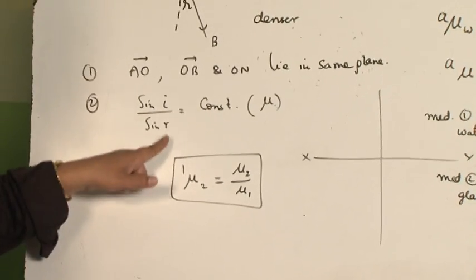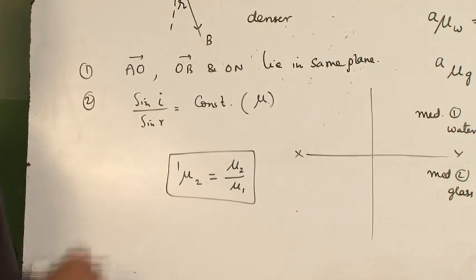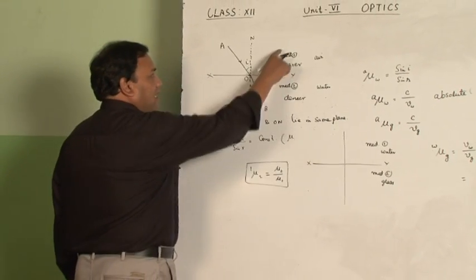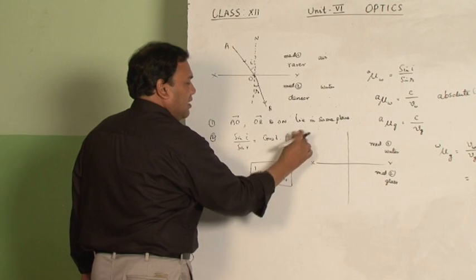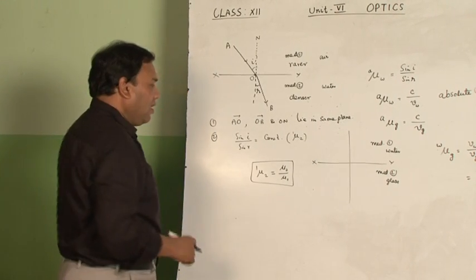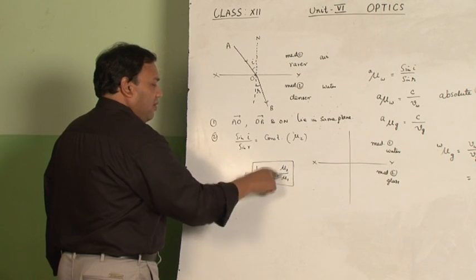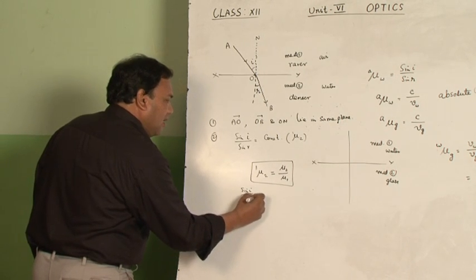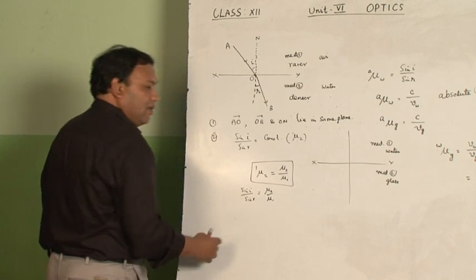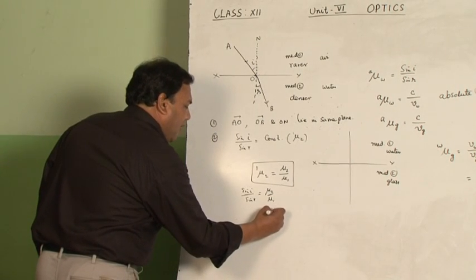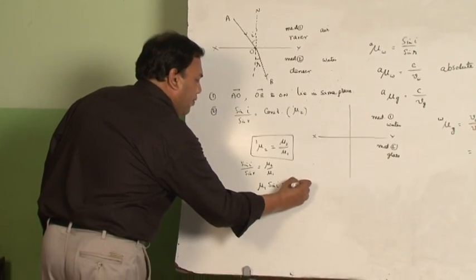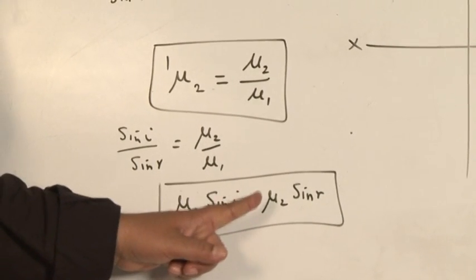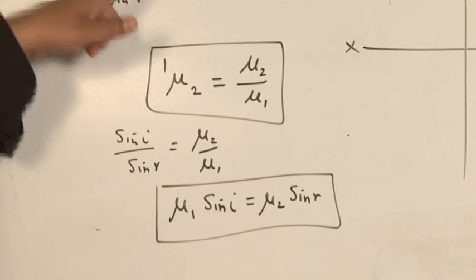So here, in sin i by sin r equal to mu, this mu is called the refractive index of the medium — it is a ratio of the velocities of light. Since refraction is taking place from the first medium to the second medium, 1 mu 2 can also be written. Using these two equations, I get sin i upon sin r equal to mu 2 upon mu 1. After cross multiplication, we get mu 1 sin i equal to mu 2 sin r. This is called Snell's law in terms of the refractive indices of both media.